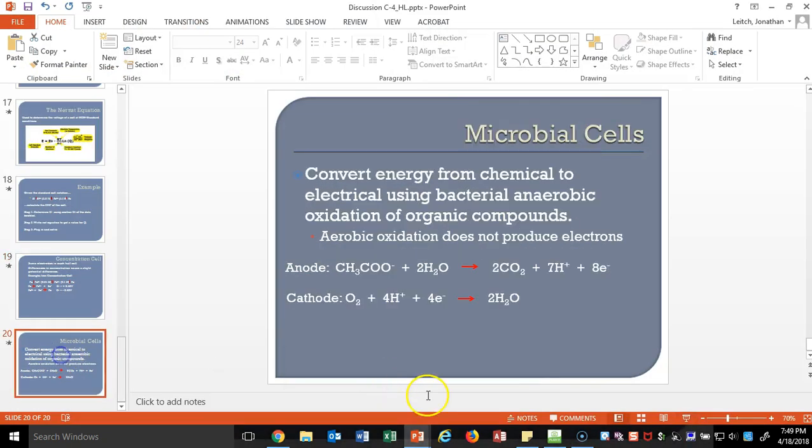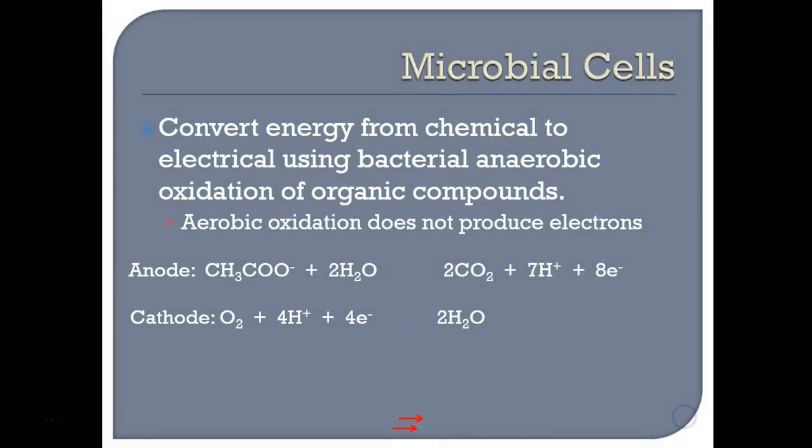Finally, microbial cells. A microbial cell converts chemical into electrical energy using a bacterial anaerobic oxidation of organic compounds. It's important to note that aerobic oxidation — oxidation involving oxygen — will not produce electrons. They use the geobacter bacteria, which oxidizes ethanoate ions to form carbon dioxide and electrons. Those electrons are added to oxygen and hydrogen to produce water. I haven't seen them ask much about microbial cells so far, which means it's probably likely to show up on your test.